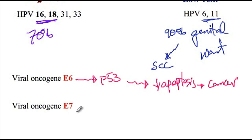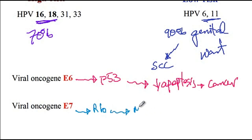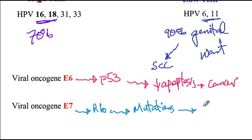Likewise, the E7 protein can bind to the retinoblastoma protein, as a consequence of which it will allow cells to proceed into the cell cycle despite the presence of mutations. Therefore, damaged cells can continue through the cell cycle, increase proliferation, and eventually cause cancer due to the accumulation of mutations.